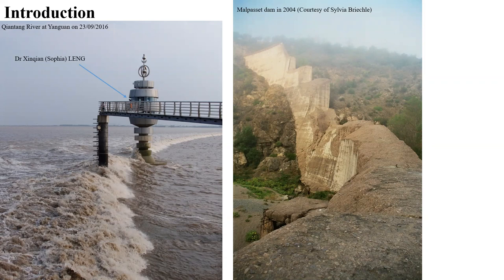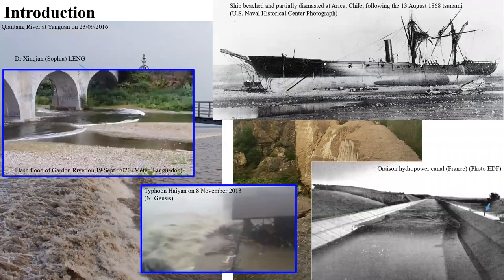Such a surge or bore can be generated by very different physical processes. For one, it can be caused by the sudden failure of a dam — on the right hand side is the failed Malpassé dam in southern France, whose failure in 1959 killed over 450 people. Other generation mechanisms include in-river tsunami and flash floods in rivers. On the left hand side is a photograph taken three weeks ago in southern France where two people were killed during extreme flash flooding.